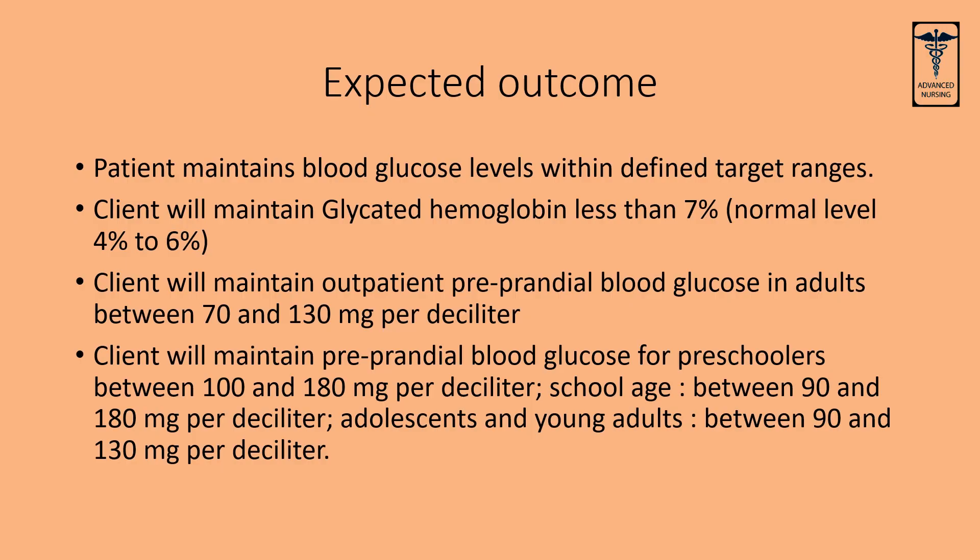Expected outcomes of unstable blood glucose level: the patient maintains blood glucose levels within defined target ranges. Client will maintain glycated hemoglobin less than 7% — the normal level is 4% to 6%. Client will maintain outpatient preprandial blood glucose in adults between 70 and 130 mg per deciliter.